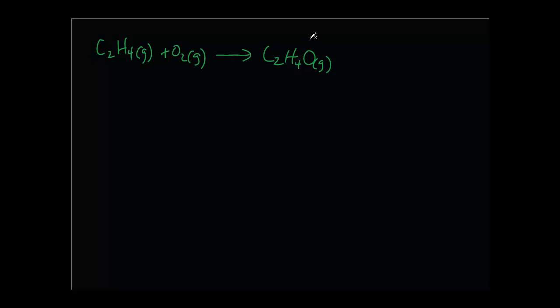And the problem asks first to balance. And how do you know it's not balanced already? Well, if you divide it into two sides, the left and the right. Left side has two carbons, right side has two. Left side has two oxygens, right side has only one. Left side has four hydrogens, right side has four.